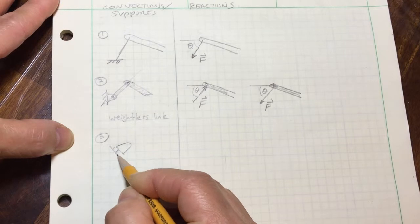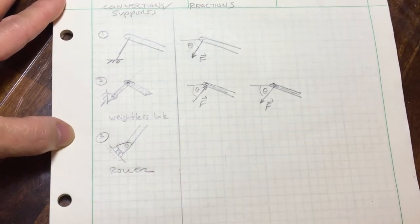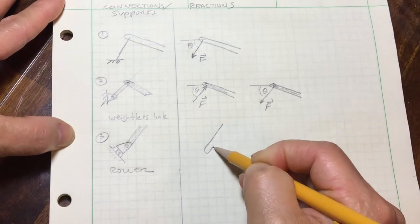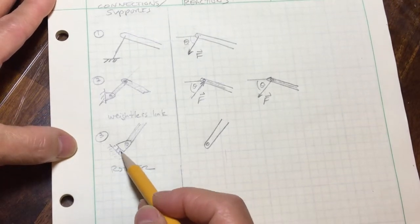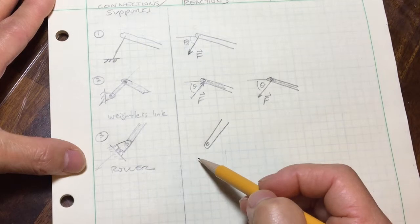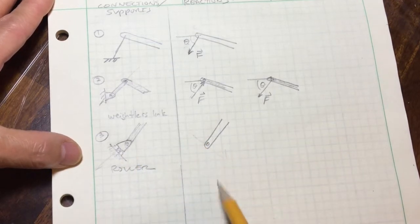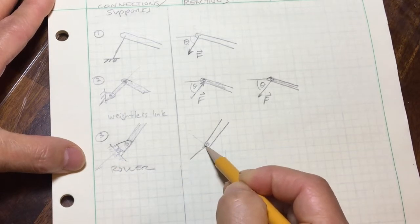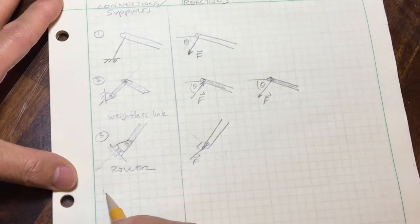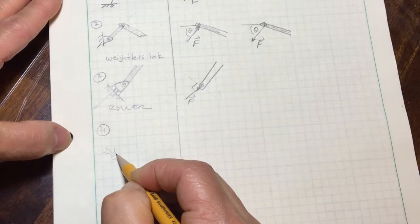Number three: suppose we have an inclined surface with a roller and some kind of linkage attached to it on a ground. We free this linkage from the support. What the roller does is prevent translation perpendicular to the incline; therefore the reaction force is perpendicular to that incline. So the reaction force is drawn perpendicular to the inclined surface.